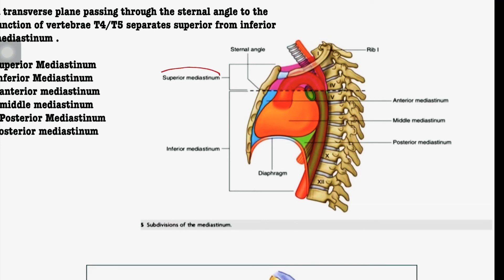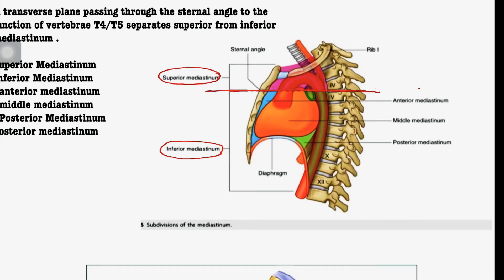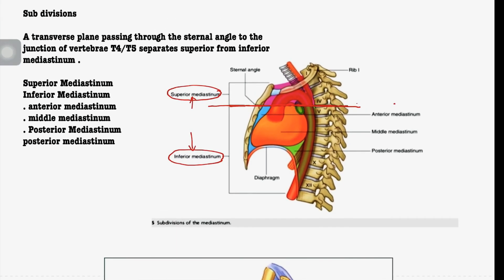The mediastinum is divided into two parts: superior mediastinum and inferior mediastinum. The division is based on a line called the transverse thoracic plane — also known as the sternal angle plane. This plane passes through the external angle and the T4–T5 intervertebral disc. This transverse plane separates the superior mediastinum from the inferior mediastinum.